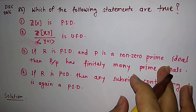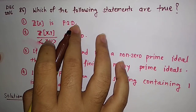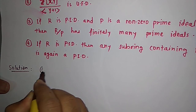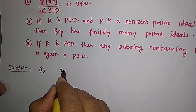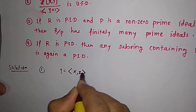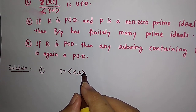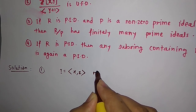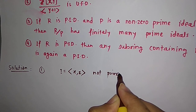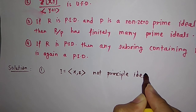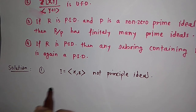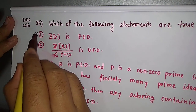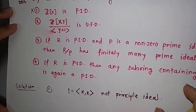So the first option says that Z[x] is a PID, but that cannot be possible because the ideal generated by x and 2 — where 2 is not a unit in Z — is not a principal ideal, since it has two generators. Therefore, the first option cannot be true, and Z[x] is not a PID.